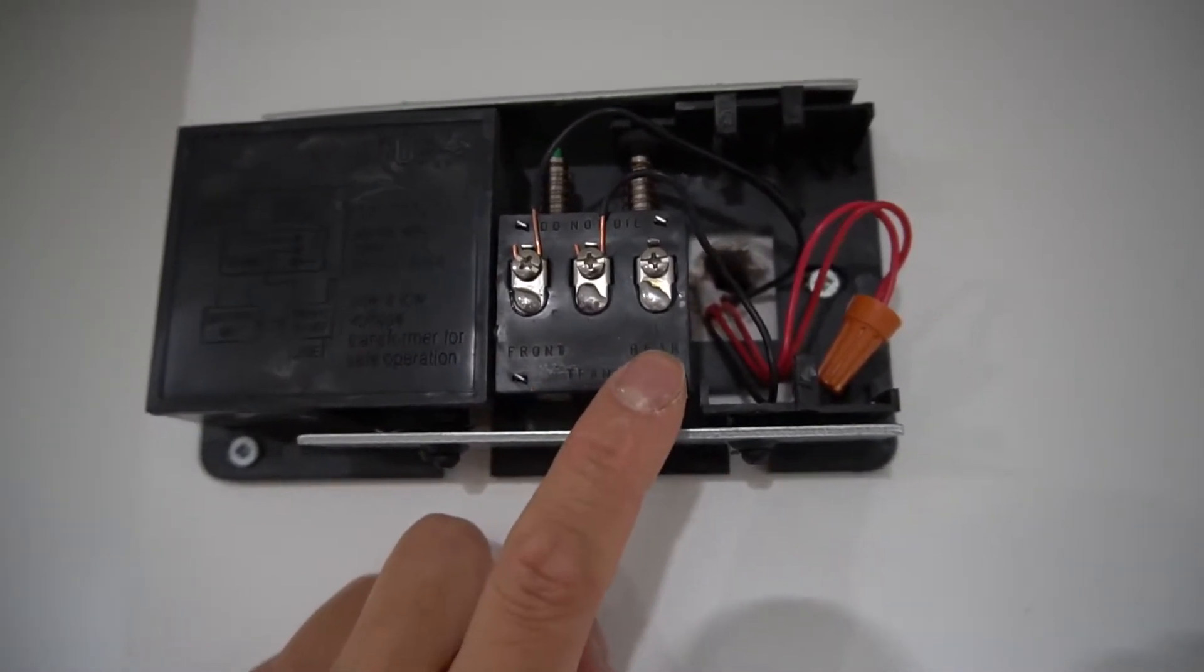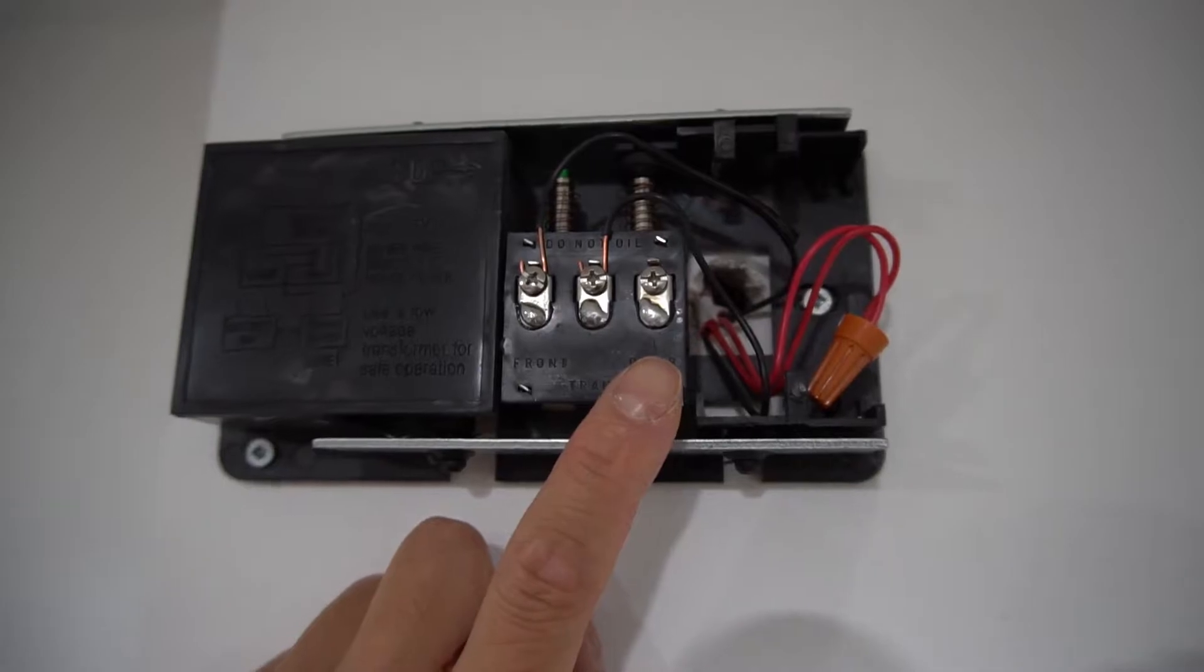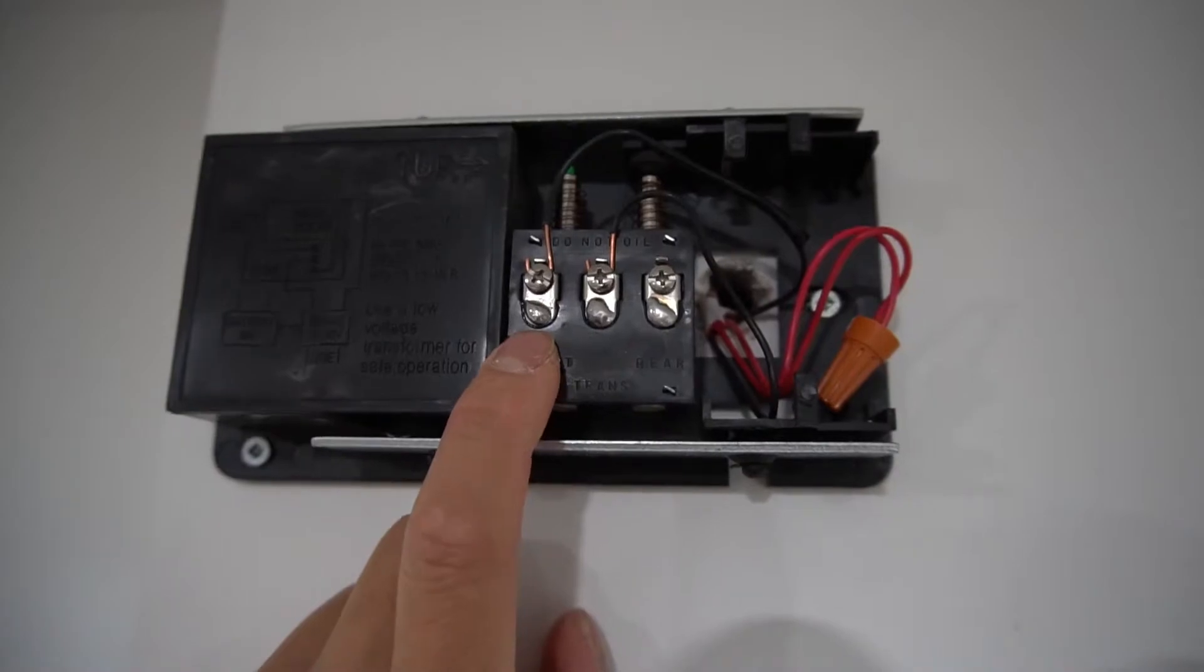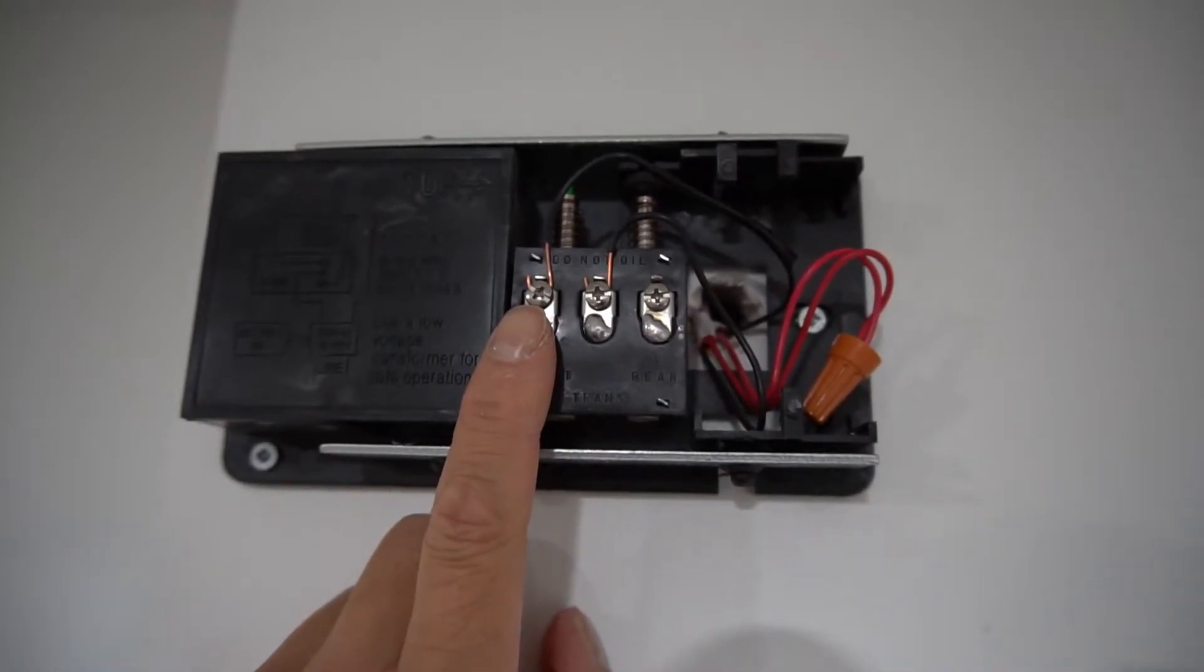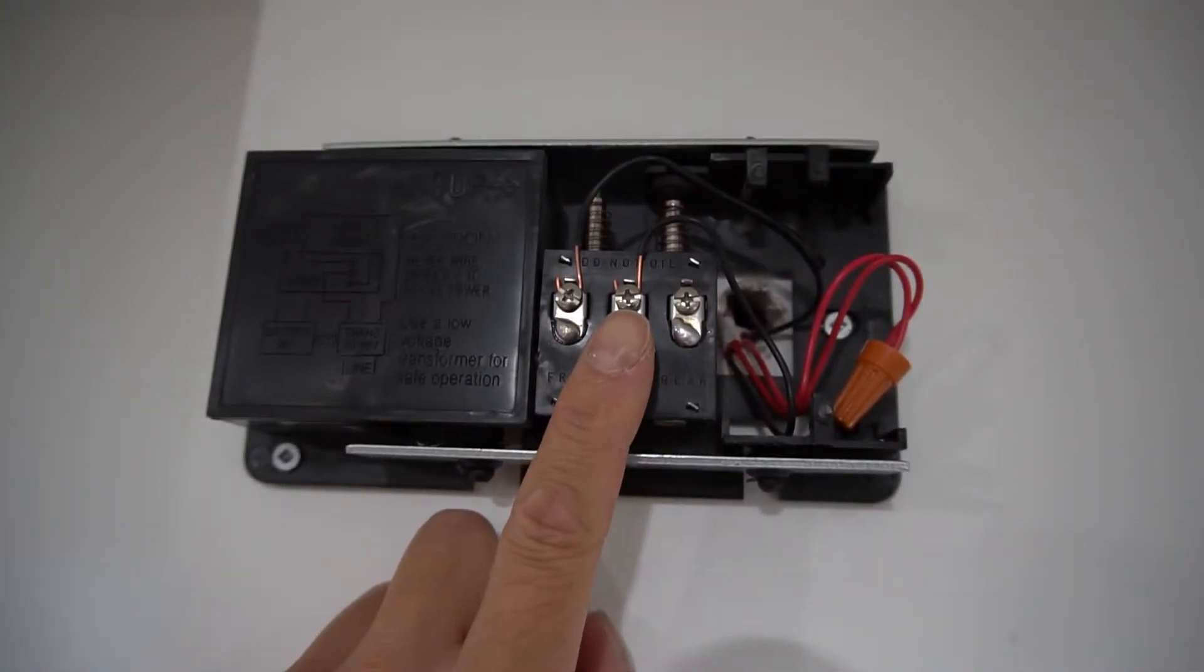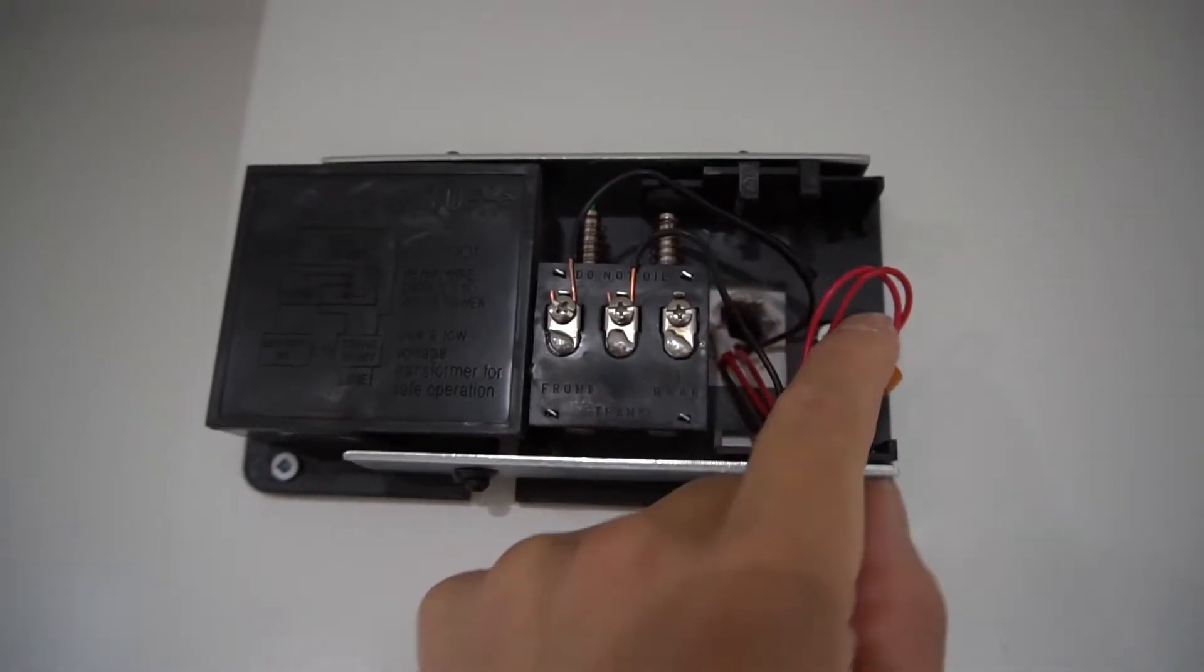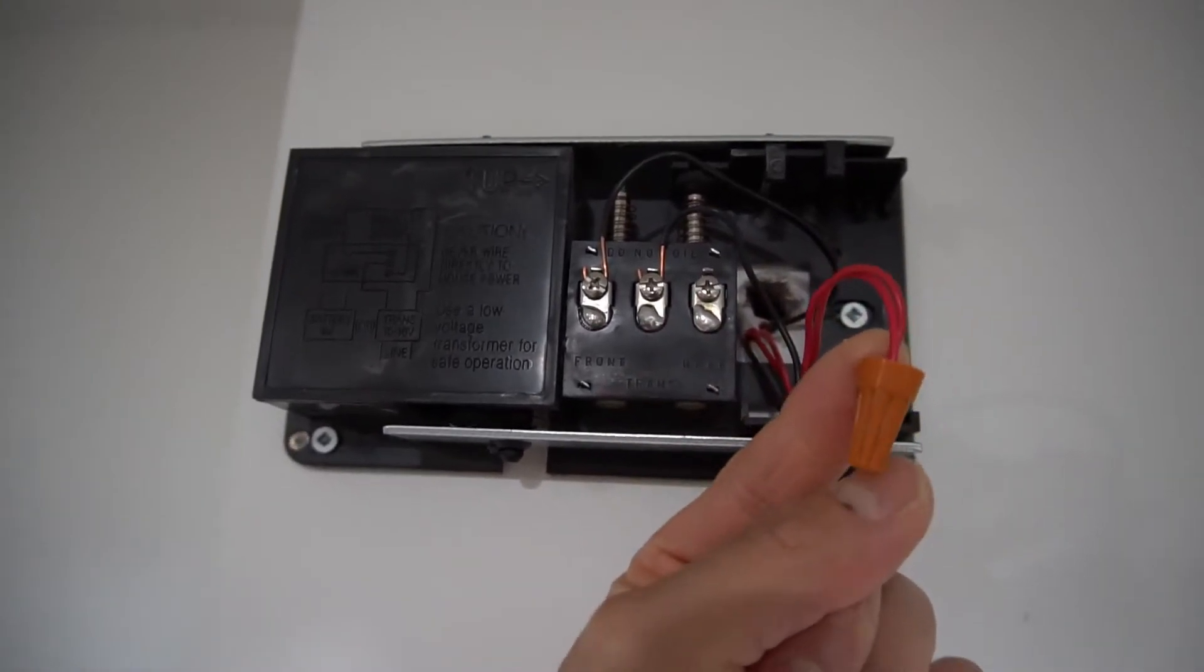If you have a rear doorbell, you will need an additional 18-2 wire. So the first black wire will be the front doorbell inserted to the screw. And the second wire will be coming from the transformer. And then lastly, you splice the red wires together.